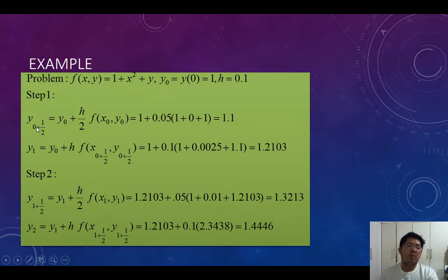Step 1: y_{0+1/2} = y_0 + h/2 * f(x_0, y_0). Substituting into the problem: 1 + 0.05 * (1 + 0 + 1) = 1.1.